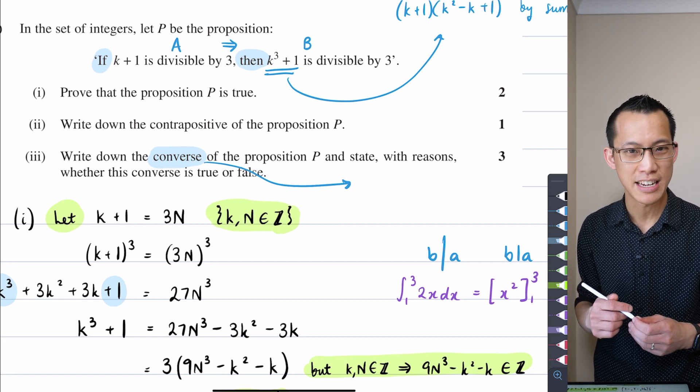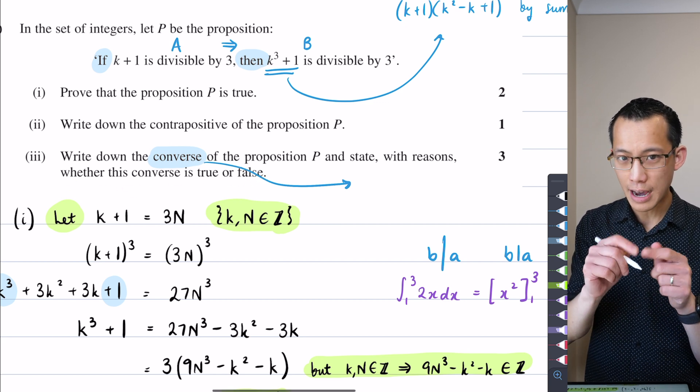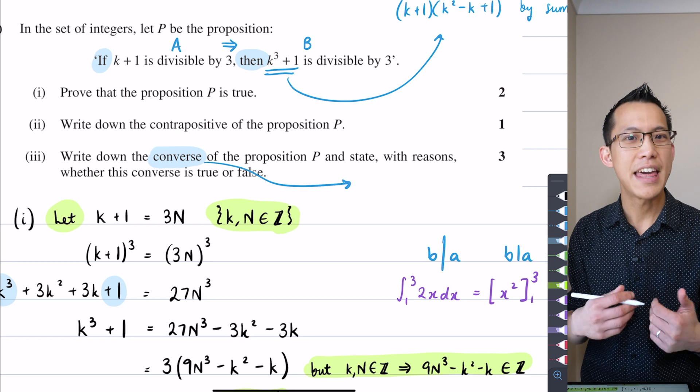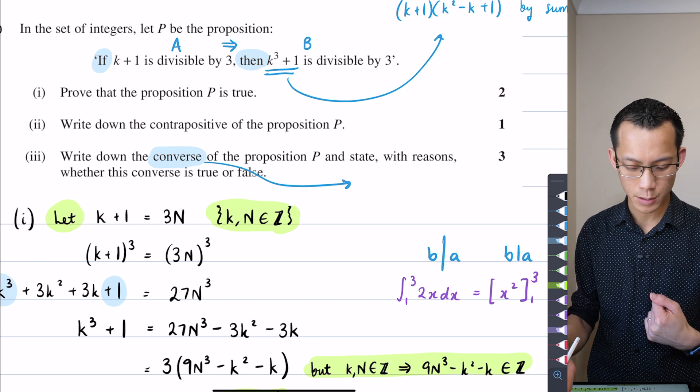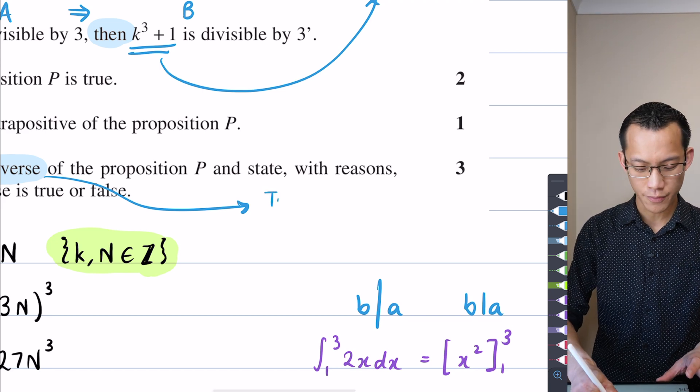Part of this question and what makes it challenging, why so much of the state did poorly on it, is they don't tell you whether this thing is true or false. You've got to identify whether it's true or false and then prove whichever one it is.